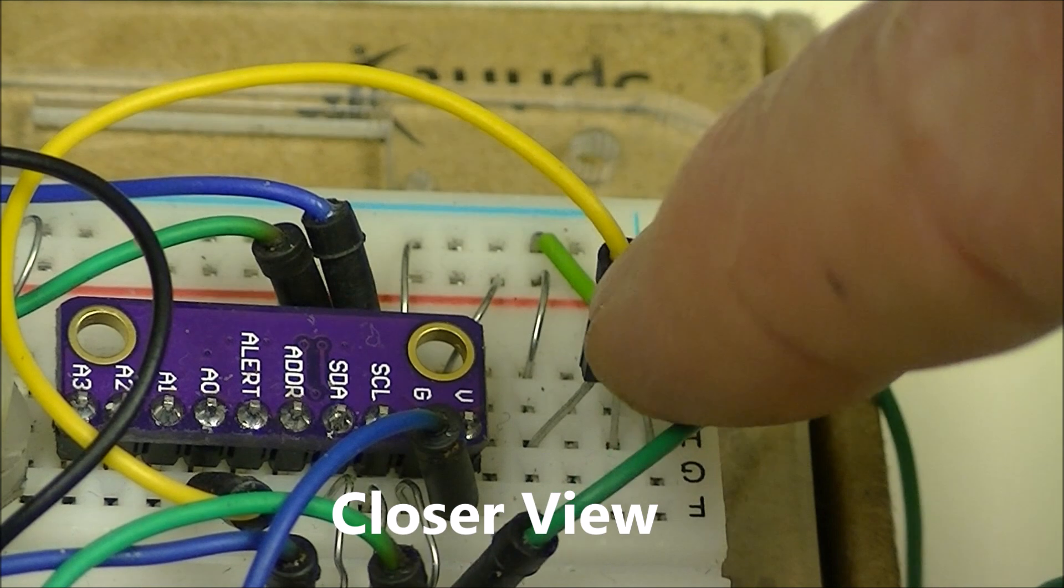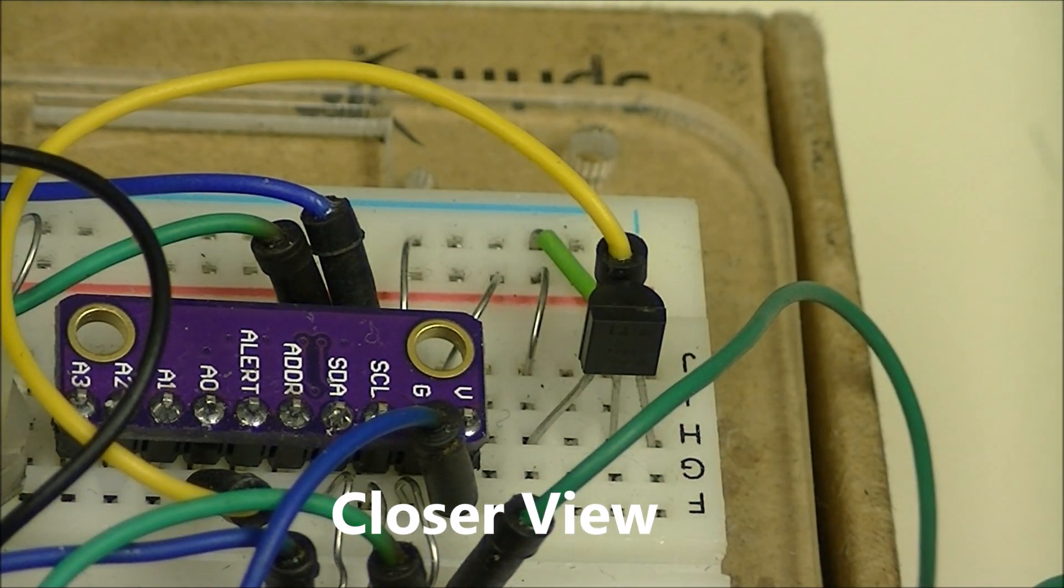What you're seeing here, this is a TMP37, it's an analog centigrade temperature sensor.